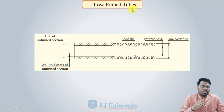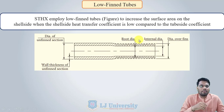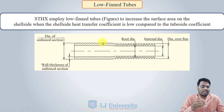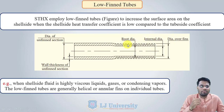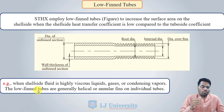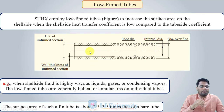Shell and tube heat exchangers employ low fin tubes to increase the surface area on the shell side when the shell side heat transfer coefficient is low compared to the tube side coefficient. This is especially applicable when the shell side fluid is highly viscous liquid, gas, or condensing vapour. Low fin tubes generally have helical or annular fins on individual tubes. The surface area of such fins is about 2.5 to 3.5 times that of bare tubes without fins.